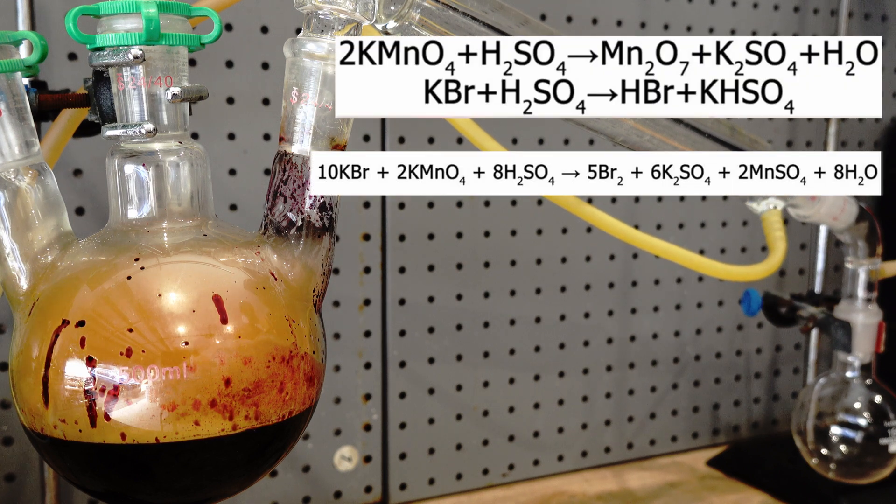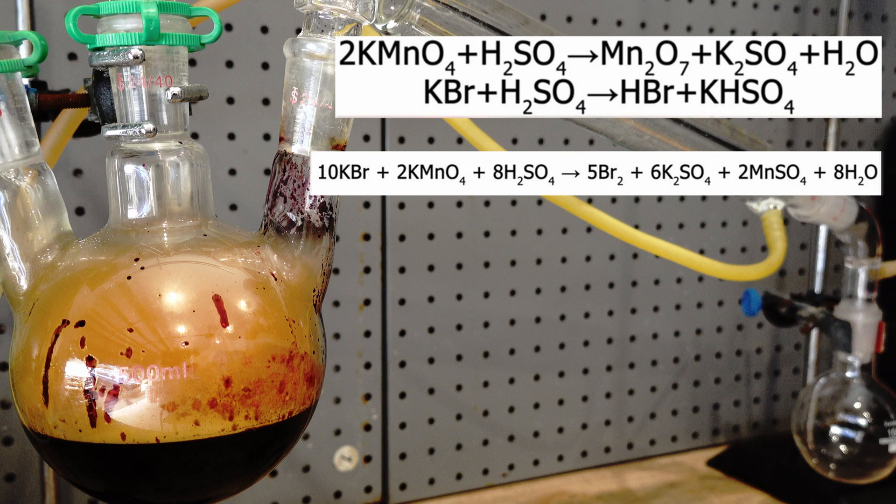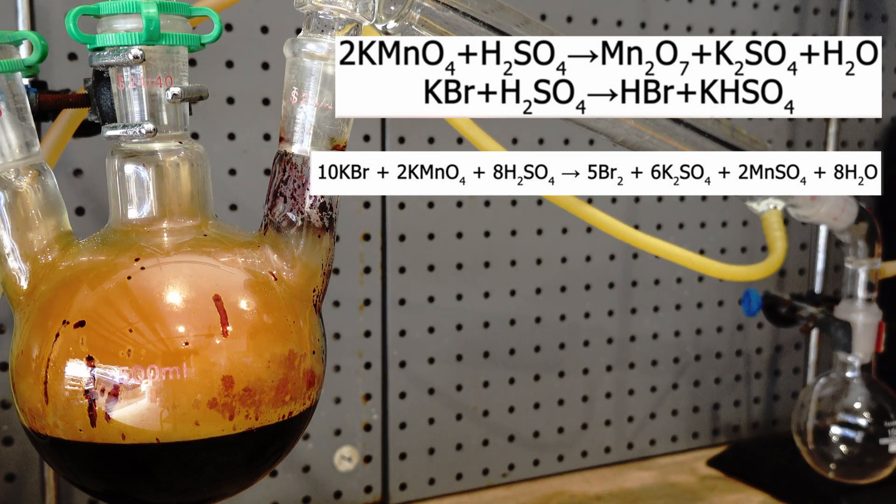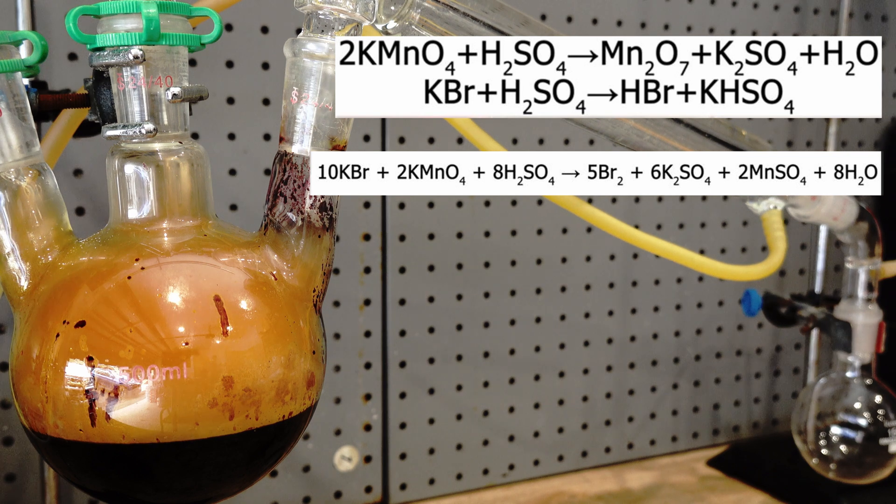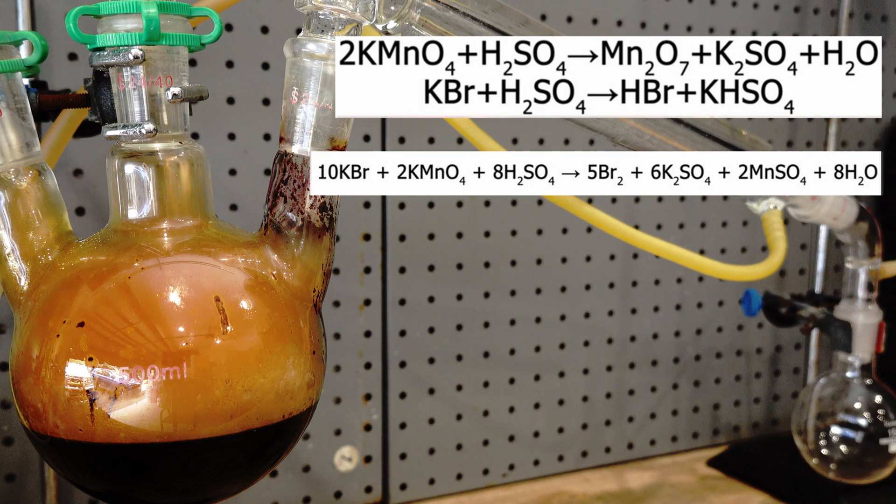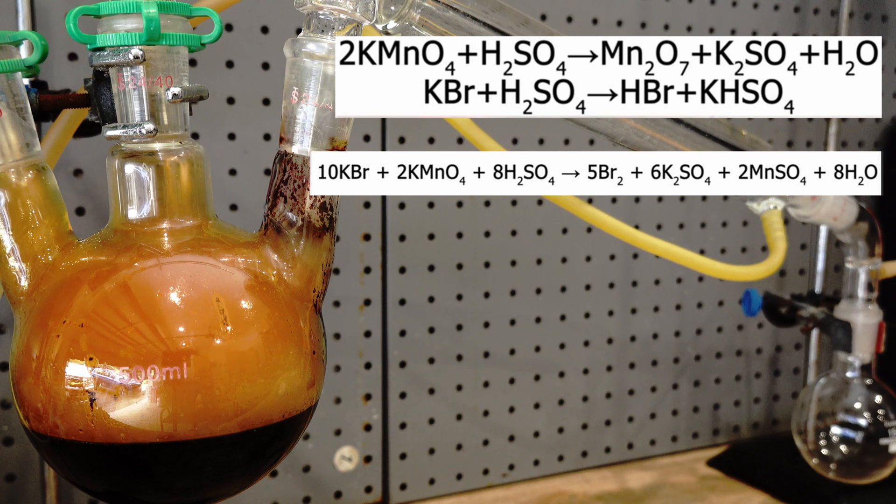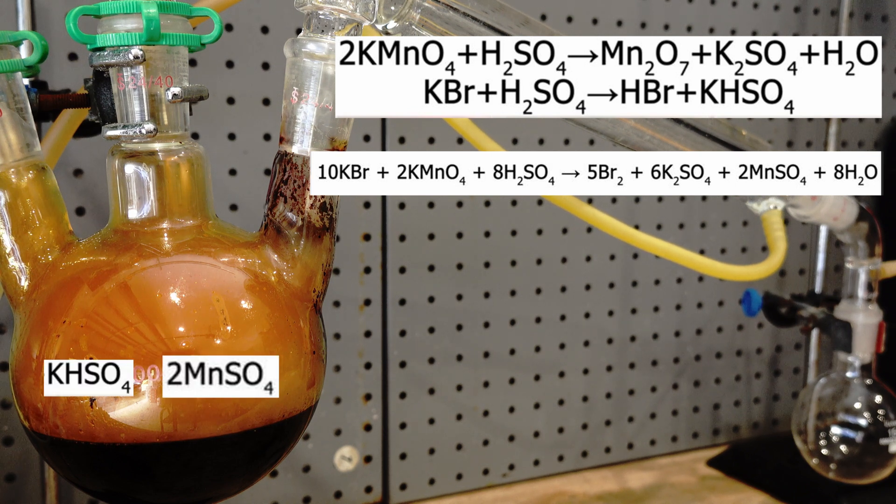The reaction going on here is a redox reaction. The potassium permanganate, as a powerful oxidizer, is readily oxidising the Bromine anion in potassium bromide, forming elemental bromine which instantly boils off due to its low boiling point of approximately 59 degrees Celsius. The remaining products remain in the reaction flask as they are mostly solids such as potassium bisulphate and manganese sulphate.